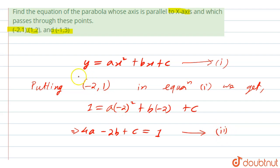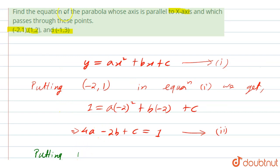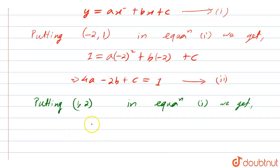Now let us substitute 1 comma 2 in the same equation that is equation 1. Putting 1 comma 2 in equation 1 we get 2 equal to a 1 square plus b into 1 plus c. So from here we will get a plus b plus c equal to 2. Let this be equation 3.